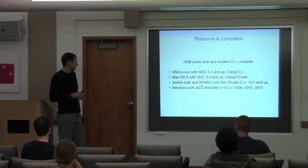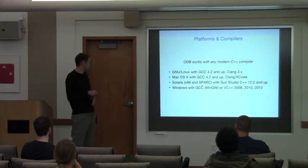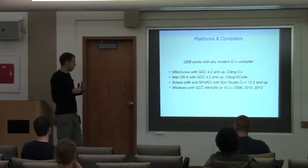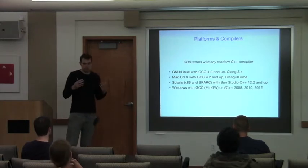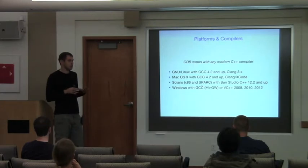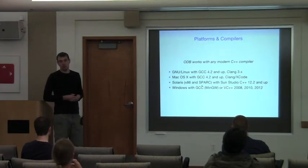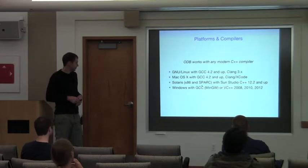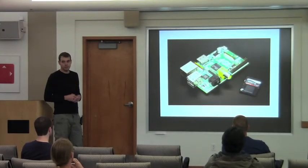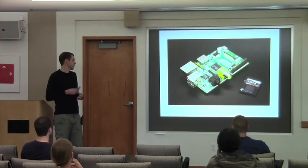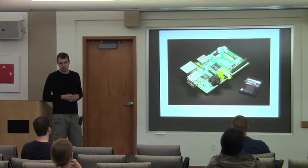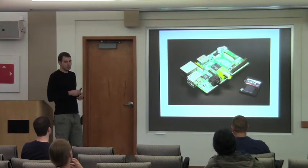We test every ODB release on multiple platforms and compilers. We also provide a pre-built binary of the ODB compiler with a private copy of GCC hidden inside for all of these platforms. Things are quite portable — if you see that the project builds with Sun Studio, you can probably build it with your toaster. That's actually a Raspberry Pi, an ARM computer that costs 32 dollars, and ODB runs on that too.